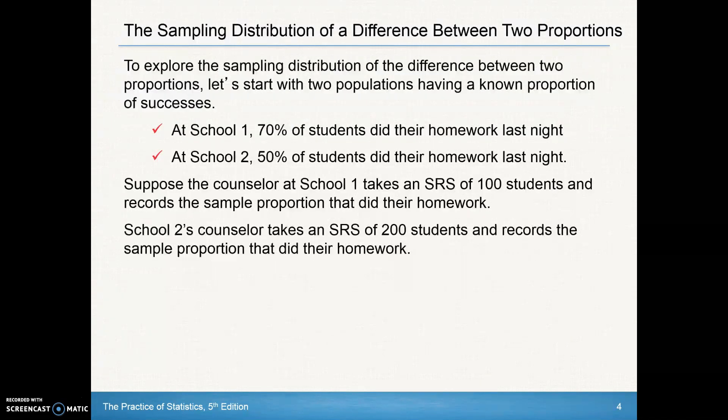To explore the sampling distribution of the difference between two proportions, let's start with two populations having a known proportion of success. At School 1, 70% of students did their homework last night—that's our P1. At School 2, 50% of students did their homework last night—that's P2. These are known parameters.